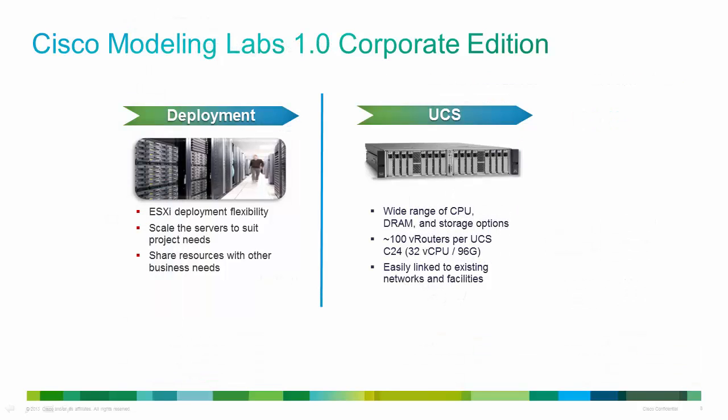Cisco Modeling Labs runs on an x86 architecture and the supported environment is a UCS server. The size of UCS server you need is based on the amount of memory and licensing you have. Each router or virtual machine takes a certain amount of memory, so you need to calculate how many routers, switches, and other devices you want to run, how much memory each will take, and make sure you have enough to cover that. The best way to do this is to use the provided Excel calculator, which will work it all out for you.